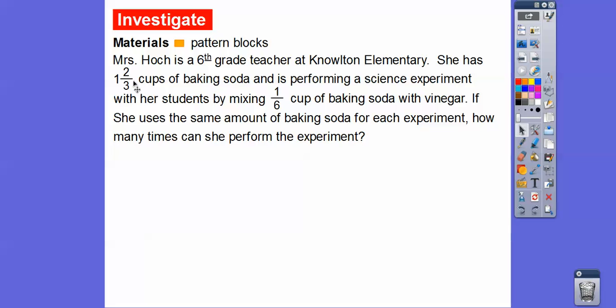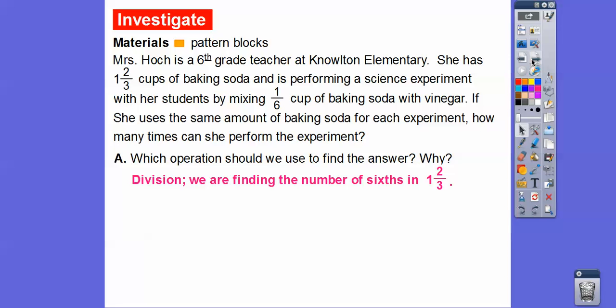So she has 1 and 2/3 cups total and she's making 1/6 cups of baking soda. So which operation should we use to find our answer? Well, this one is a division one right here because we're finding the number of 1/6 size cups that we can fit into this 1 and 2/3 cup right here.